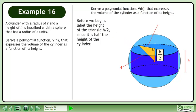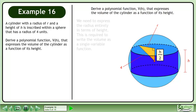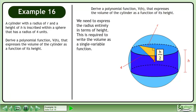Before we begin, label the height of the triangle h over 2 since it is half the height of the cylinder. We need to express the radius entirely in terms of height. This is required to write the volume as a single variable function.